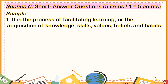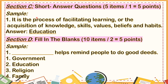For Section C, short answer questions, I am very strict — wrong spelling is wrong. If even one letter is missing, that is already considered wrong spelling and your answer will be recorded as wrong. For example, 'It is the process of facilitating learning or the acquisition of knowledge, skills, values, beliefs, and habits.' The answer is education. If you write 'educaton' missing the letter I, that is already wrong — only 5 items. Section D is fill in the blanks, 10 items divided by 2 equals 5 points. For example, 'Blank helps remind people to do good deeds' — the answer is religion; just click beside it and a tick mark will appear.